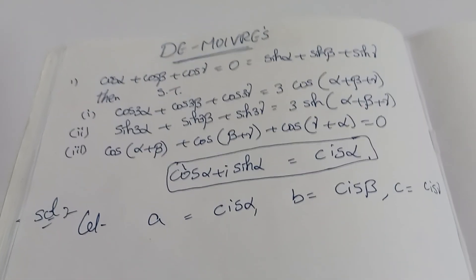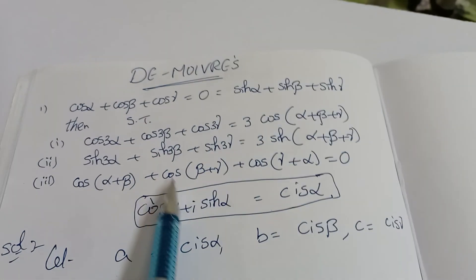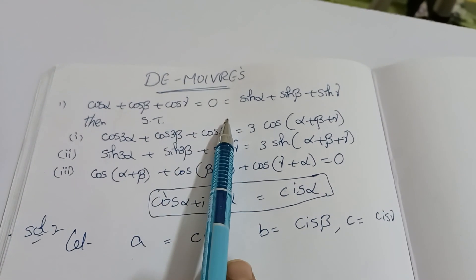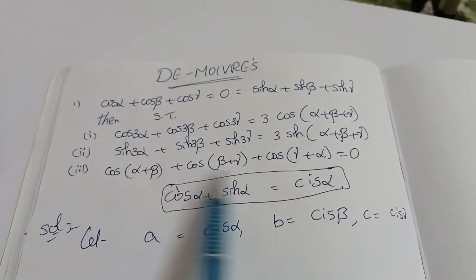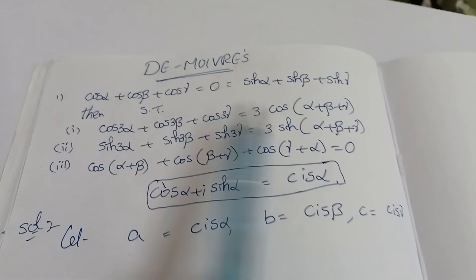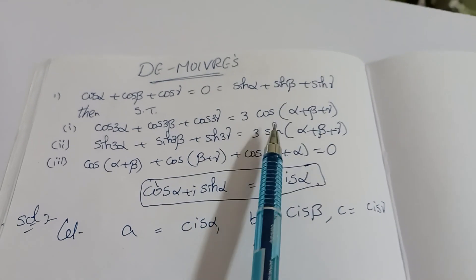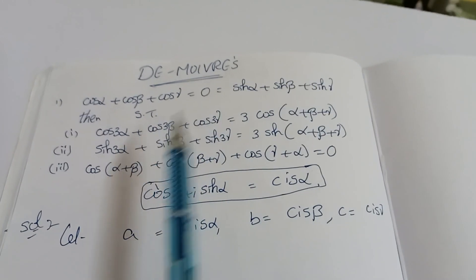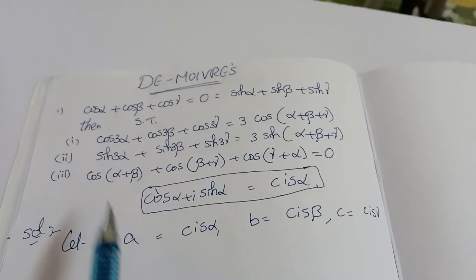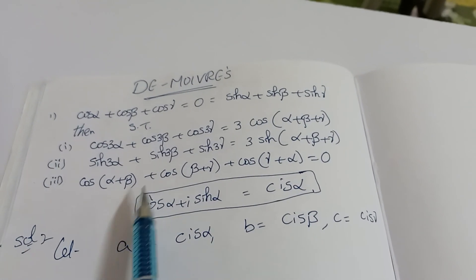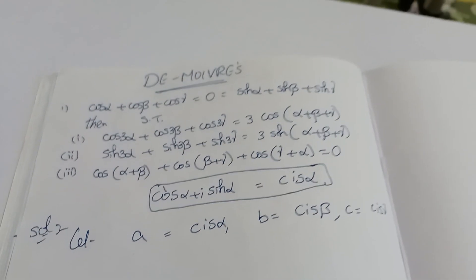Welcome back to my channel. Today we discuss important questions. The formula is: cos α + cos β + cos γ = 0, and also sin α + sin β + sin γ = 0. Given this, we need to prove three things: first, cos 3α + cos 3β + cos 3γ = 3 cos(α + β + γ); second, sin 3α + sin 3β + sin 3γ = 3 sin(α + β + γ); third, cos(α+β) + cos(β+γ) + cos(γ+α) = 0.